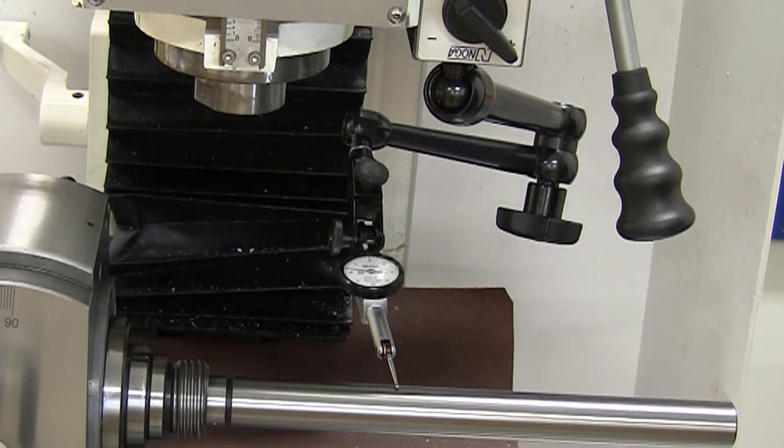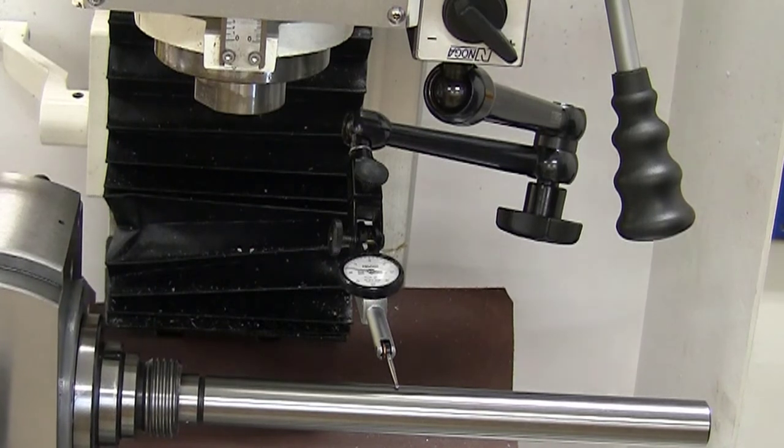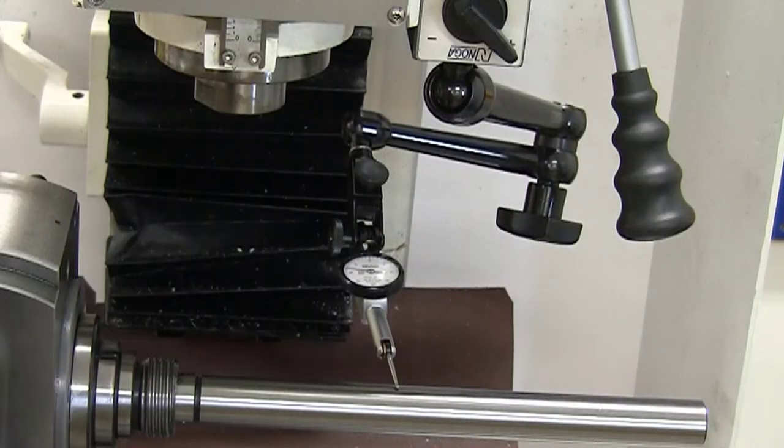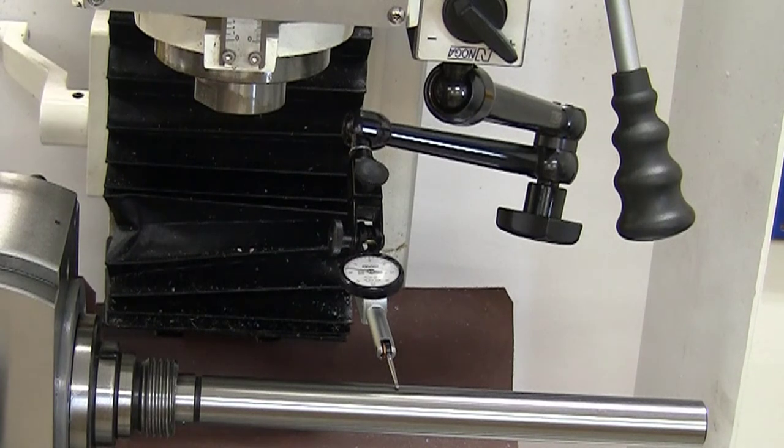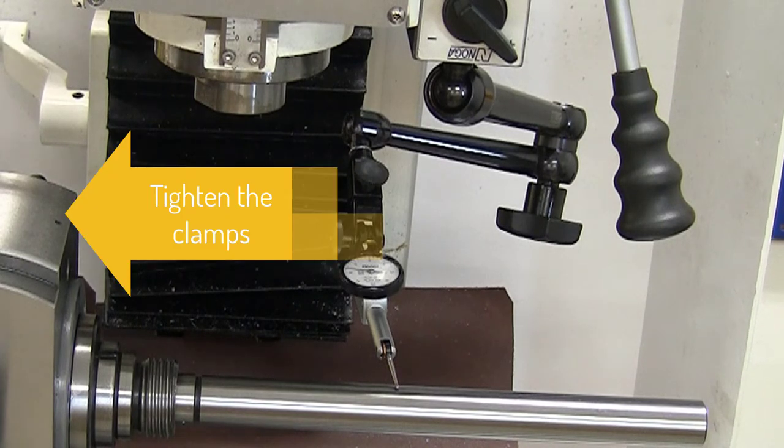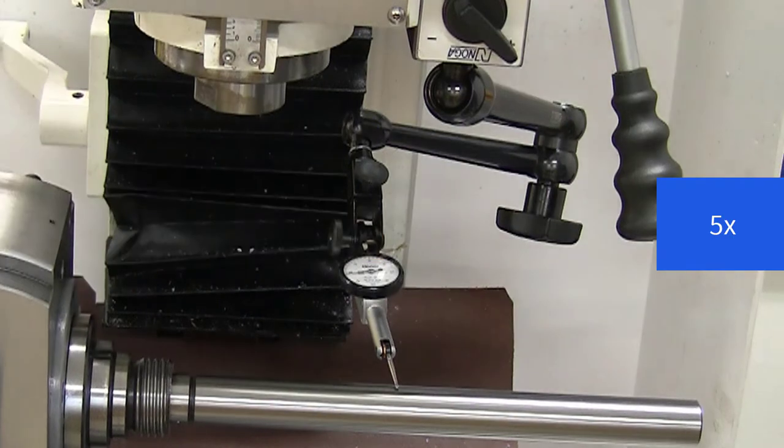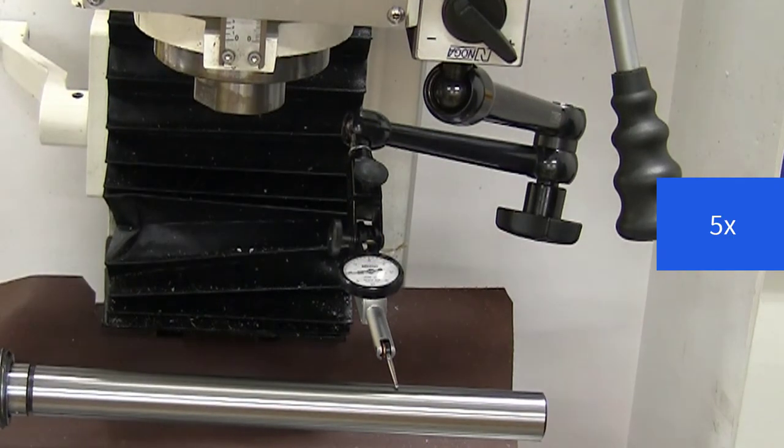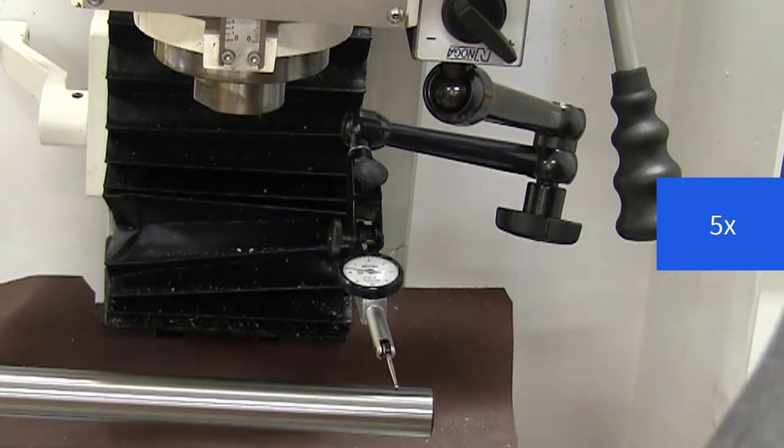Now, as of right now, the indicator is staying good, but the clamps on the dividing head are only finger-tight, so I'm going to tighten up the clamps a little bit. Things will move when you tighten the clamps. And I'm going to tighten them only a little bit, maybe about a quarter of a turn each. And let's see what happens.